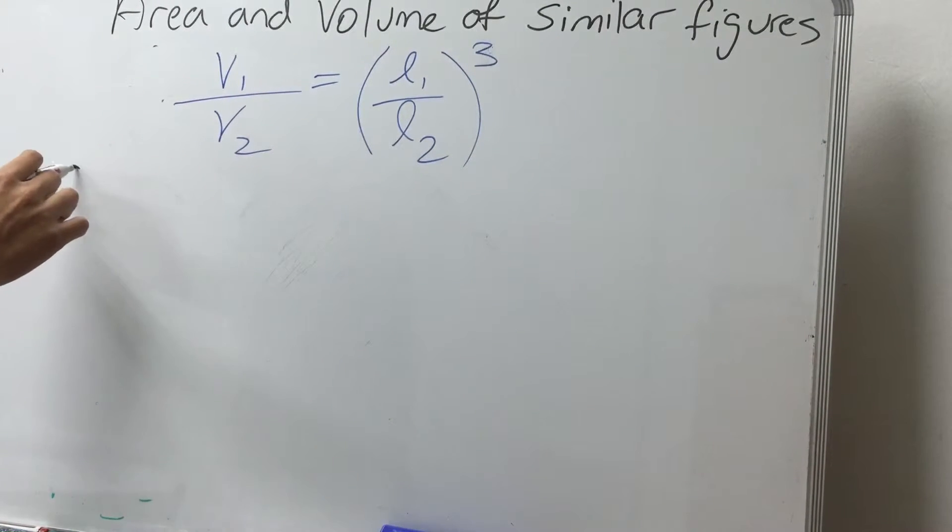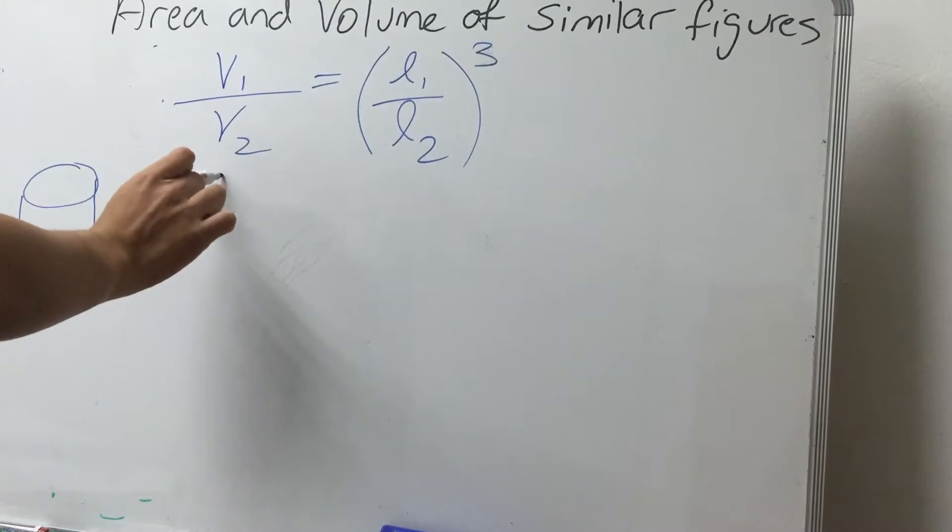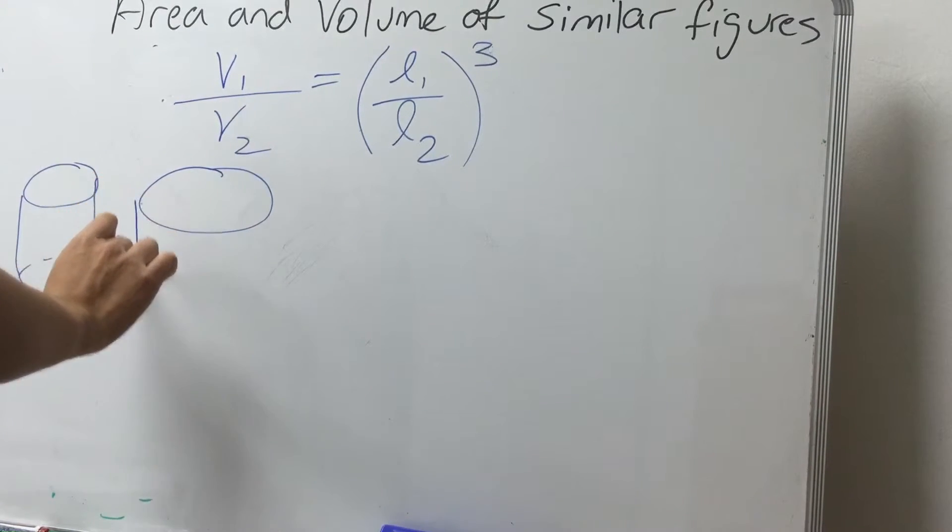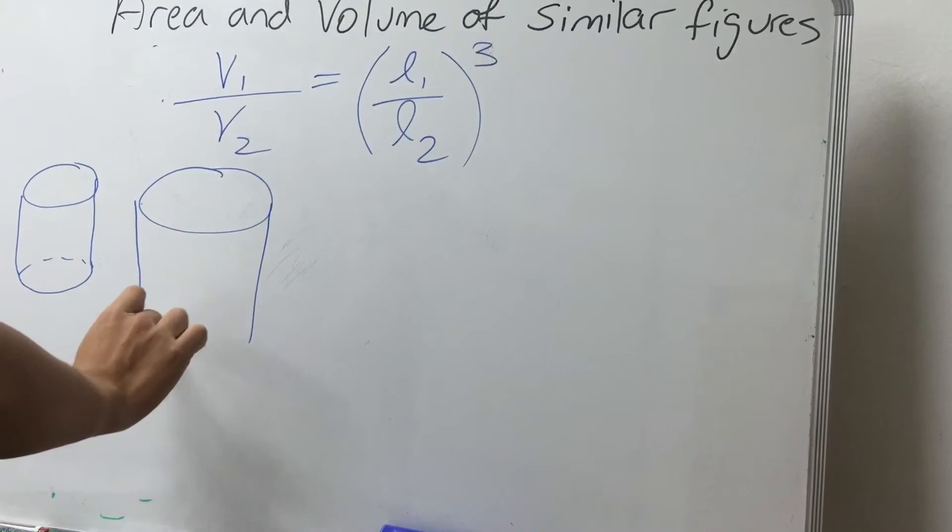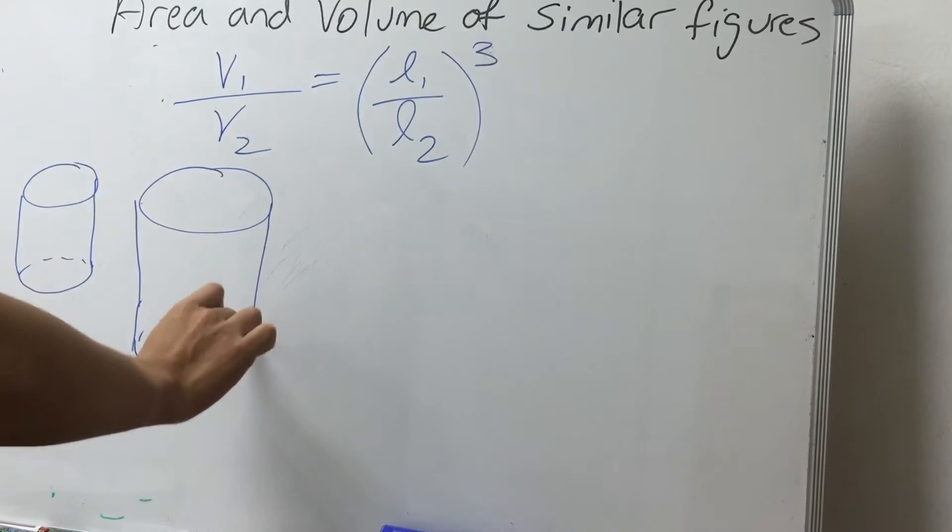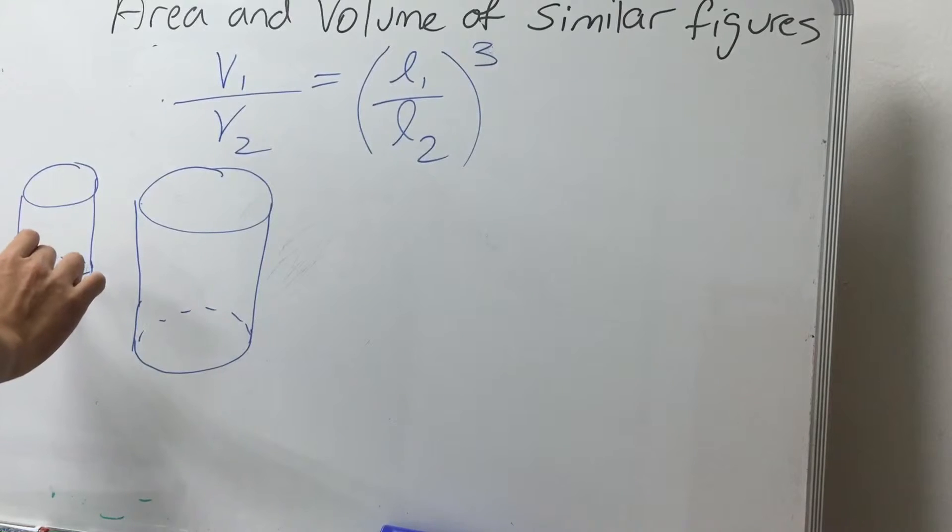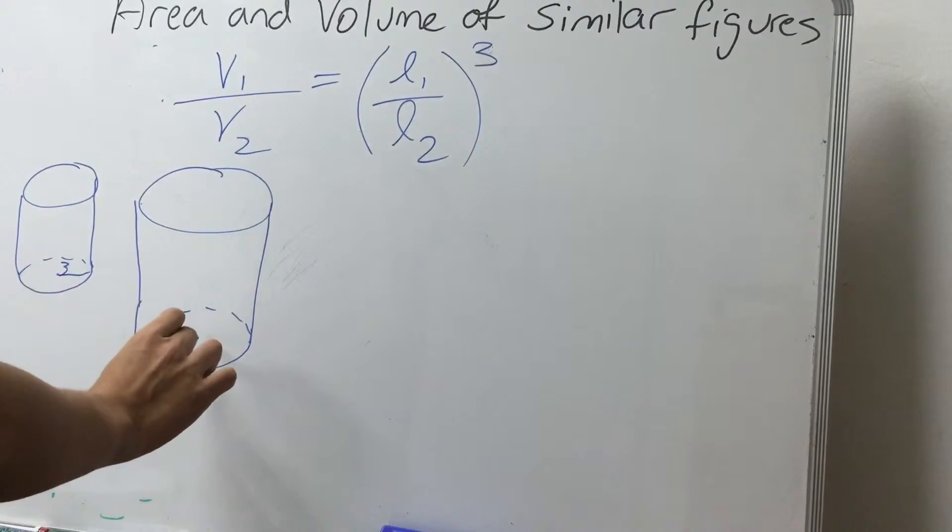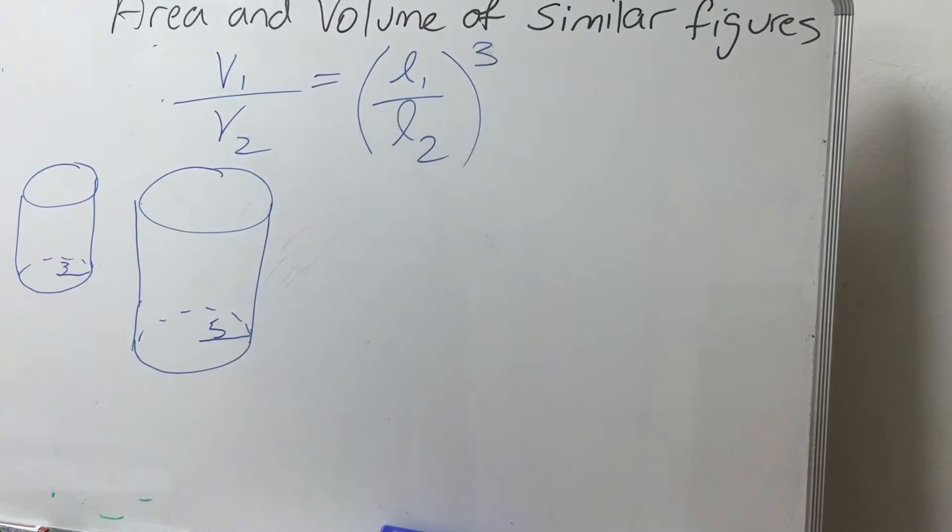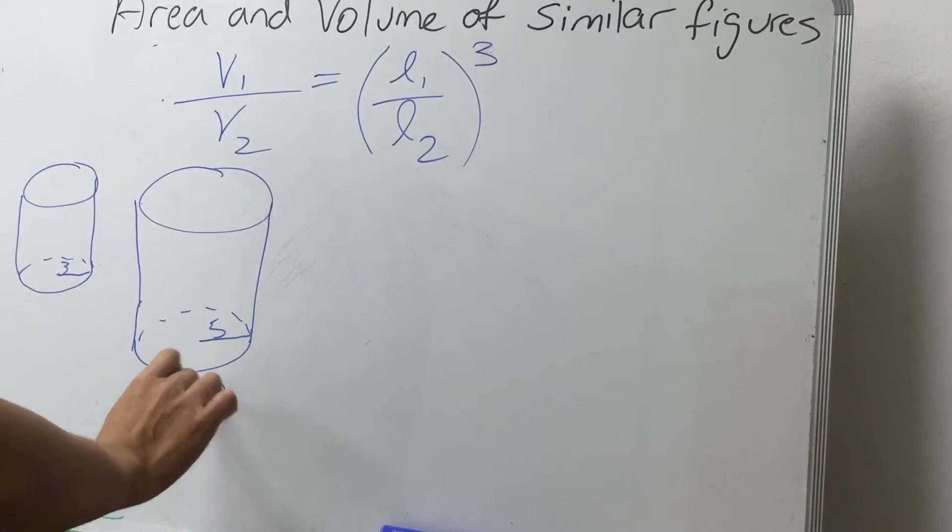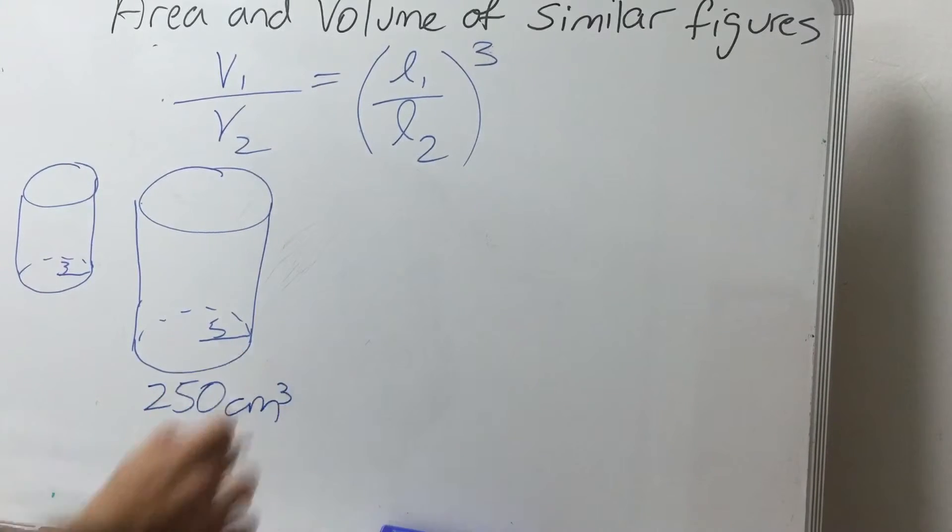Let's see some examples. For example, we have these two cylinders, one small cylinder and a bigger cylinder, and these two cylinders are similar. Let's say that the radius of the small cylinder is 3 cm, the radius of the big cylinder is 5 cm, and you know that the volume of the big cylinder is 250 cm cubed. So now the question is, what is the volume of the smaller cylinder?